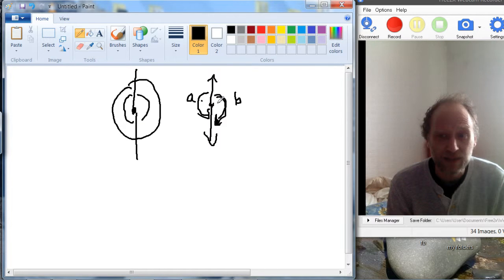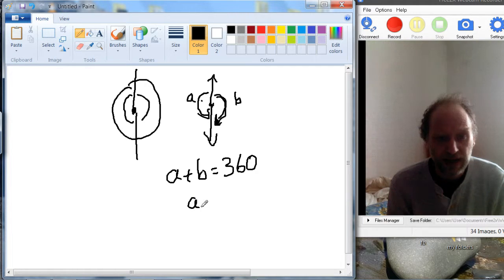And if we add them up, we know from the definition that's the turning of a full circle, so A plus B equals 360. We also know that A equals B, so that means A equals B equals 360 divided by 2, which is 180.